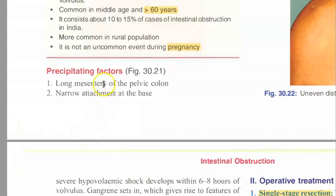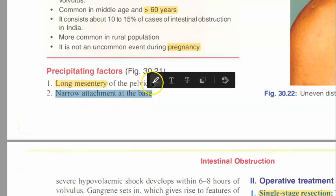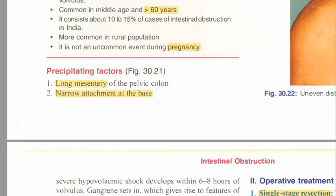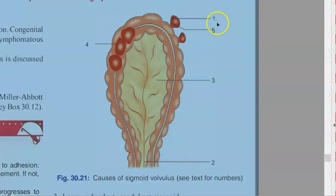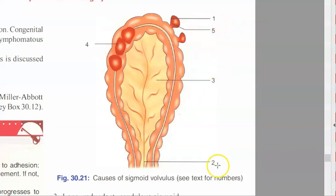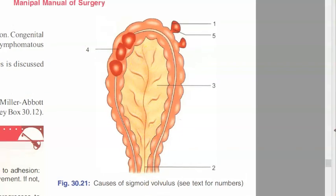Now let's look at the precipitating factors. Number one: long mesentery of the pelvic colon - because there is a long mesentery, it is able to twist. Number two: narrow attachment at the base. These are the first two precipitating factors.